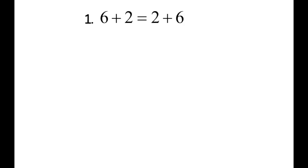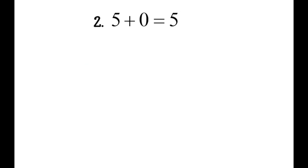Number 1: 6 plus 2 equals 2 plus 6 — the numbers moved, and moved and commute are alike, so this is the commutative property of addition. Number 2: 5 plus 0 equals 5 — some people think multiplication property of zero, but it's not multiplying. I added something but didn't change the value, so that is the identity property of addition.